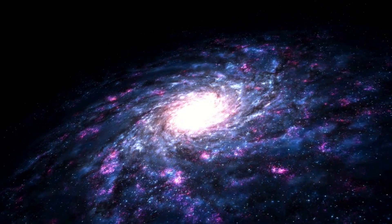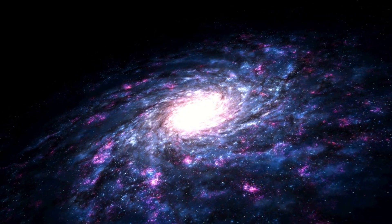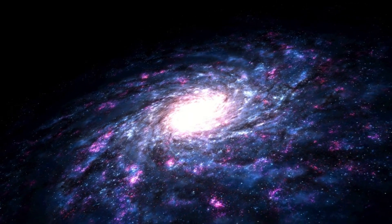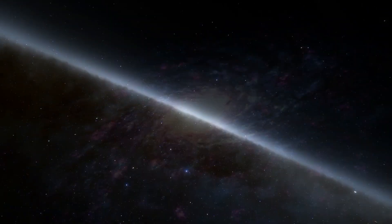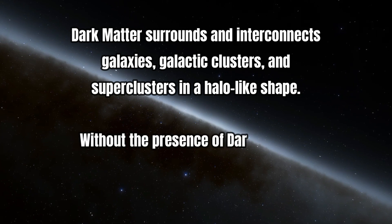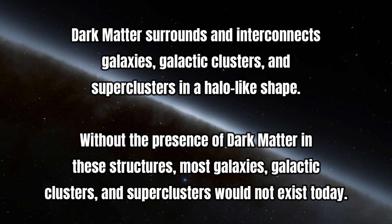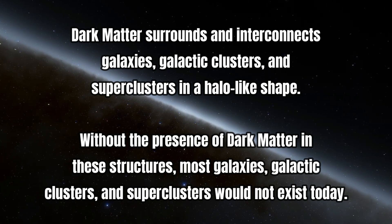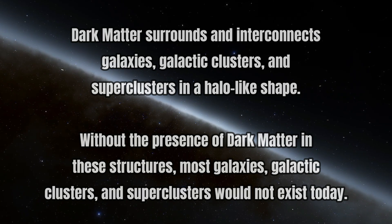In discovering such, astronomers came to the conclusion that there must be an extra invisible mass surrounding galaxies in a halo-like shape in order to make the mass distribution of such cosmological structures uniform. This idea however would not just apply to galaxies, but also to galactic clusters and superclusters too, with dark matter surrounding and interconnecting these structures with one another, playing an essential role in the existence of the largest cosmological formations we know exist today.